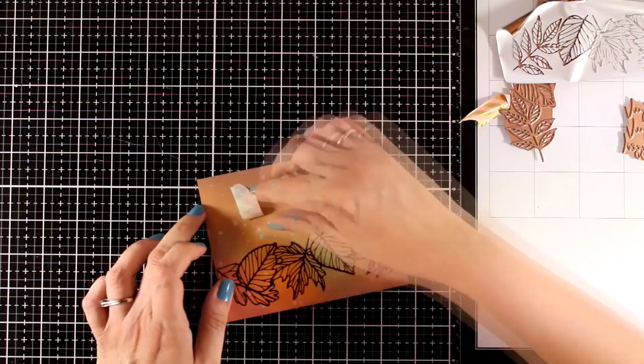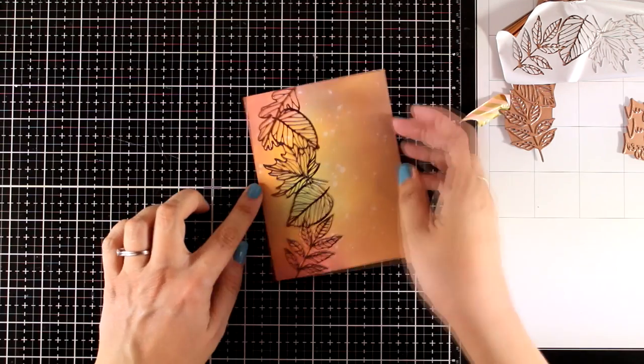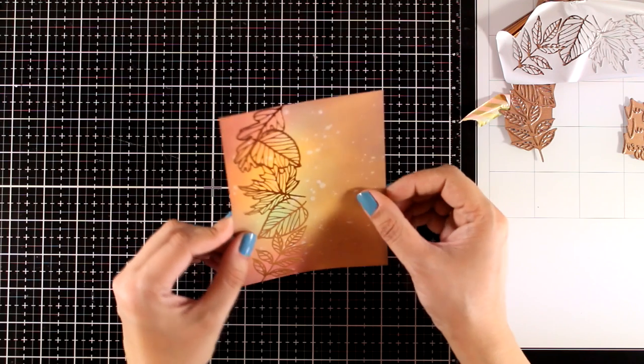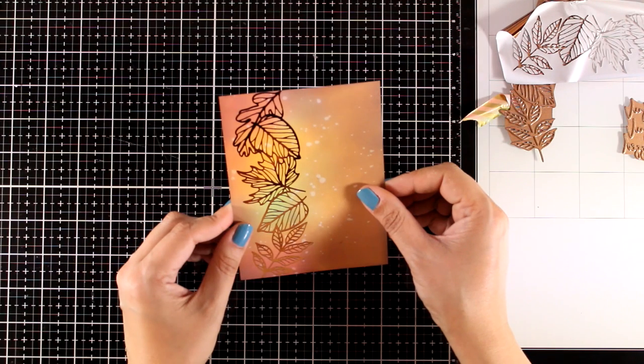I think it looks so pretty, and notice how all those leaves pick up the color from the background. Another way you can get similar results is to first foil and then do the blending, so you know better where you want to concentrate the different colors.